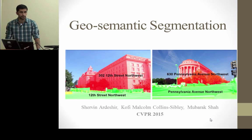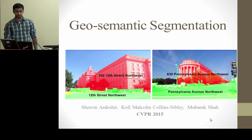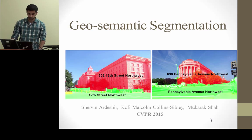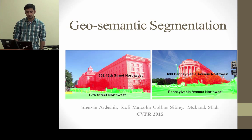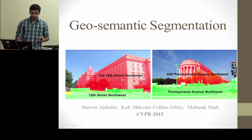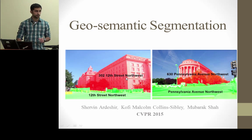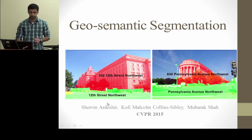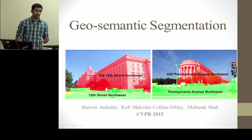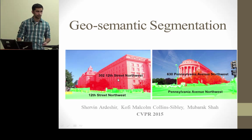Good afternoon, everyone. I'm Shervin Ardashir. I'm going to present our recent work, which is a joint work with Kofi Malcolm Collins and Mubarak Shah. It's about geosemantic segmentation. The goal in this work is to divide an image into semantically meaningful segments with georeference — we want to not only say that this is a building and this is a street, but which specific building it is, alongside its address and geolocation.